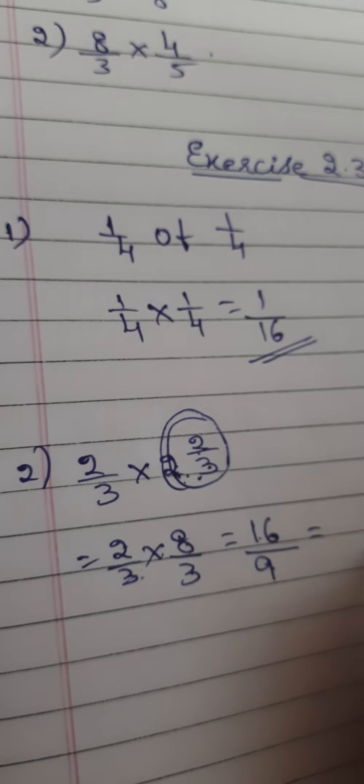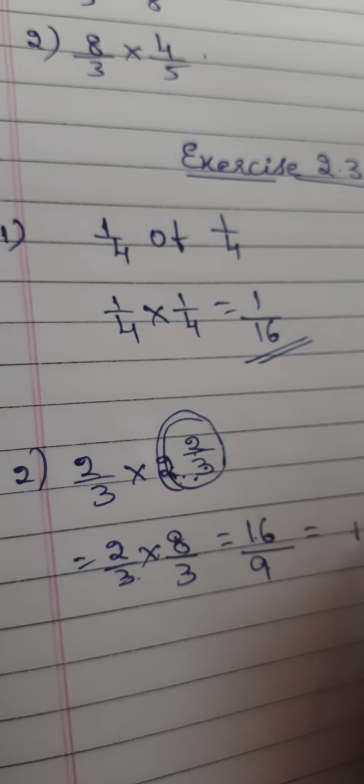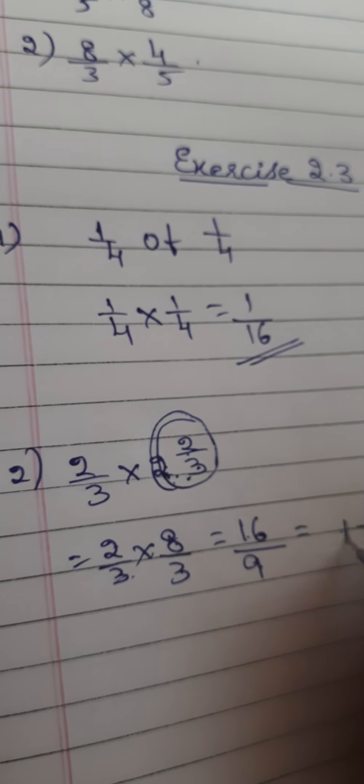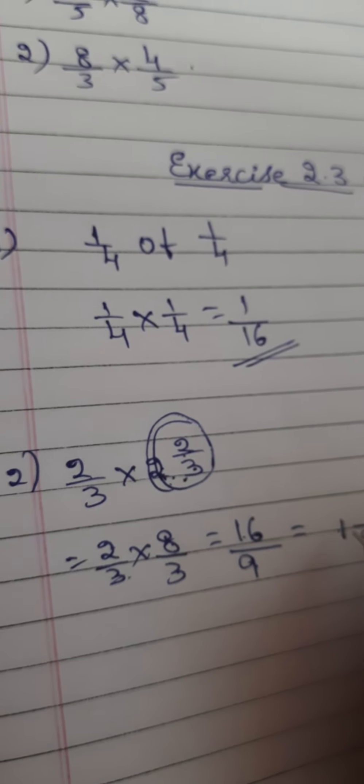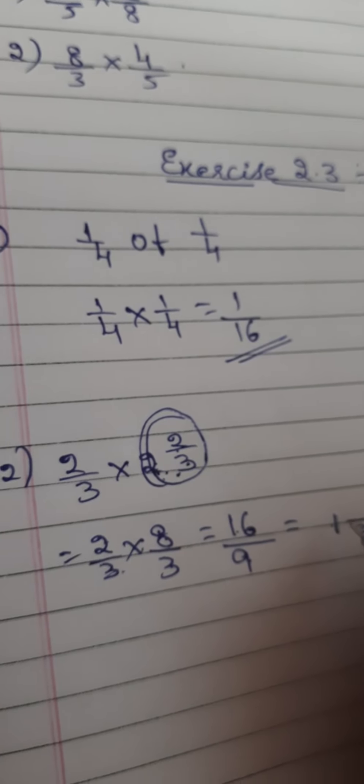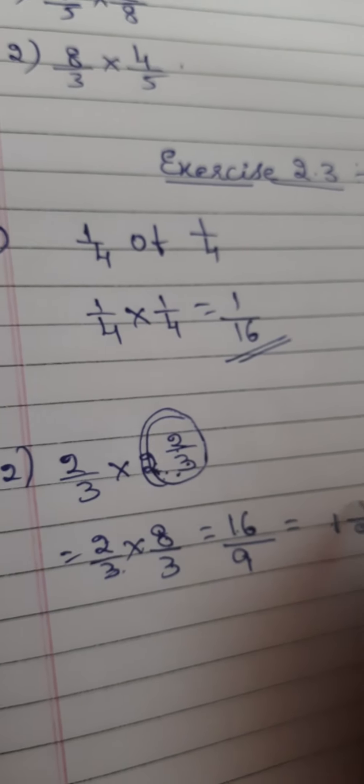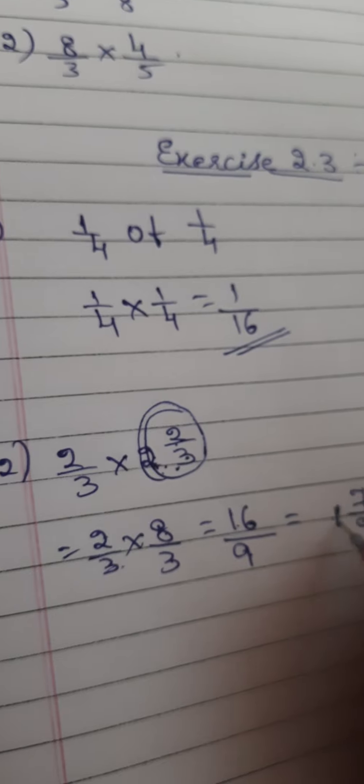So this 9, we can write as 9 × 1, which is 9. So the remaining is how much? 7. So, 1 7/9.